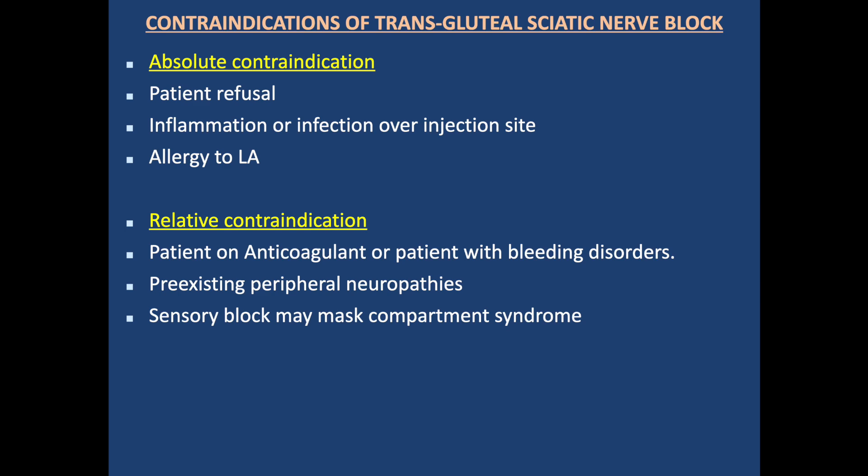Contraindications of the Gluteal Crease Sciatic Nerve Block: Absolute contraindications are the same as for other regional techniques — patient refusal, inflammation or infection at the site of injection, and allergy to local anesthetic. Relative contraindications include patients on anticoagulants or with bleeding disorders, and pre-existing peripheral neuropathy, as the sensory block may mask compartment syndrome.